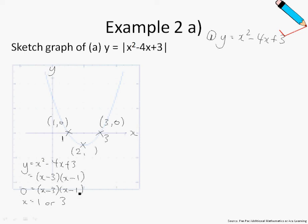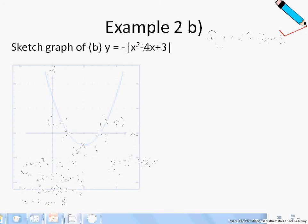Let me just do some side working over here. So when x is 2, y is 2 squared minus 4 times 2 plus 3. Press this in your calculator.